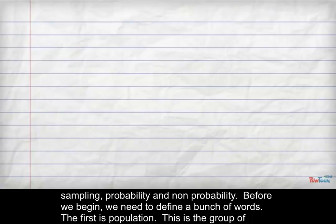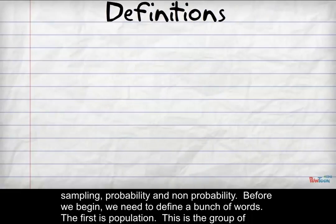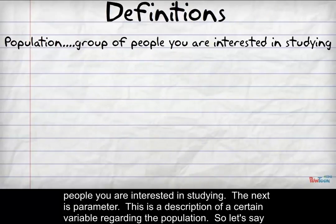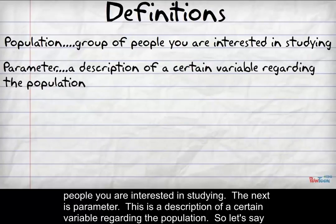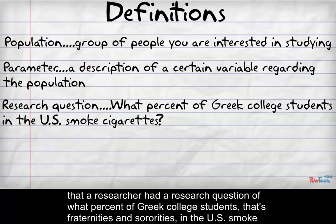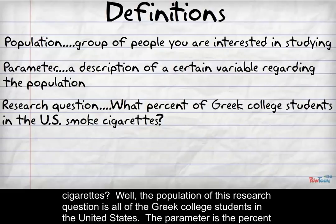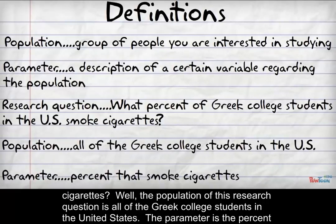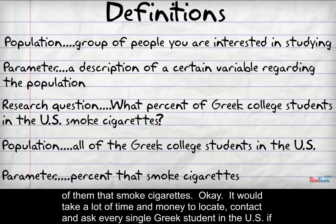Before we begin, we need to define a bunch of words. The first is population — this is the group of people you're interested in studying. The next is parameter — this is a description of a certain variable regarding the population. So, let's say that a researcher had a research question of what percent of Greek college students, that's fraternities and sororities, in the U.S. smoke cigarettes? The population of this research question is all of the Greek college students in the United States. The parameter is the percent of them that smoke cigarettes.